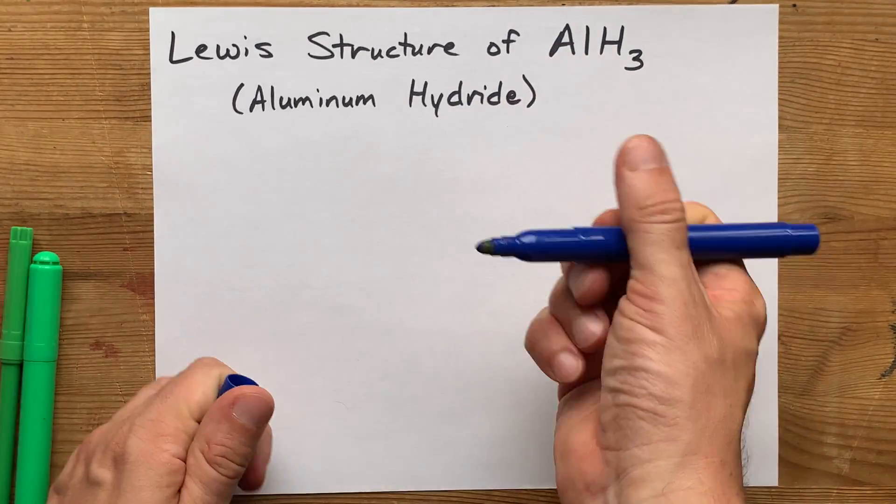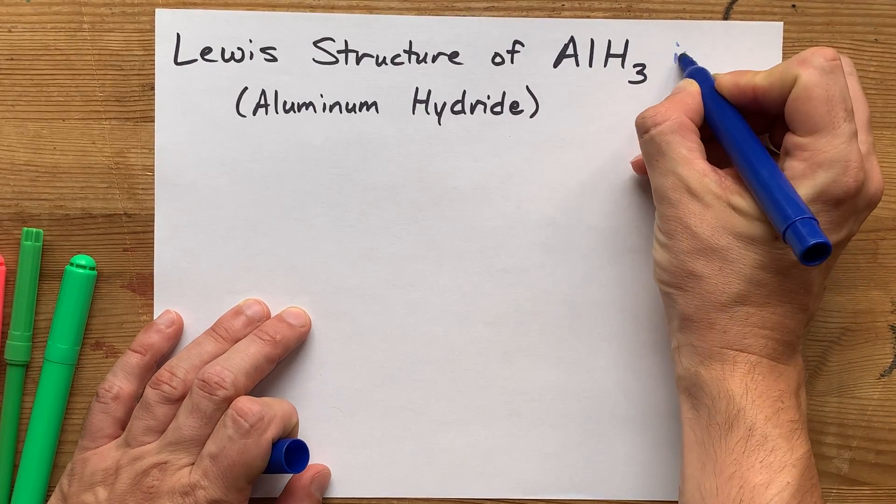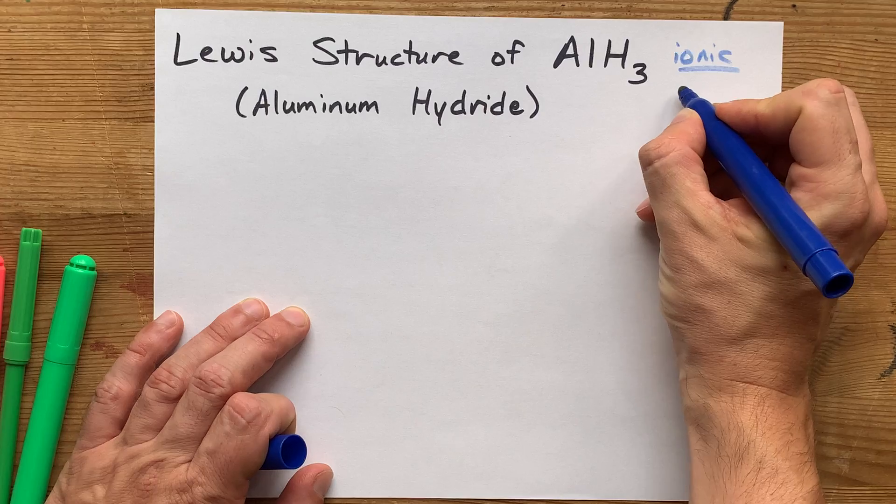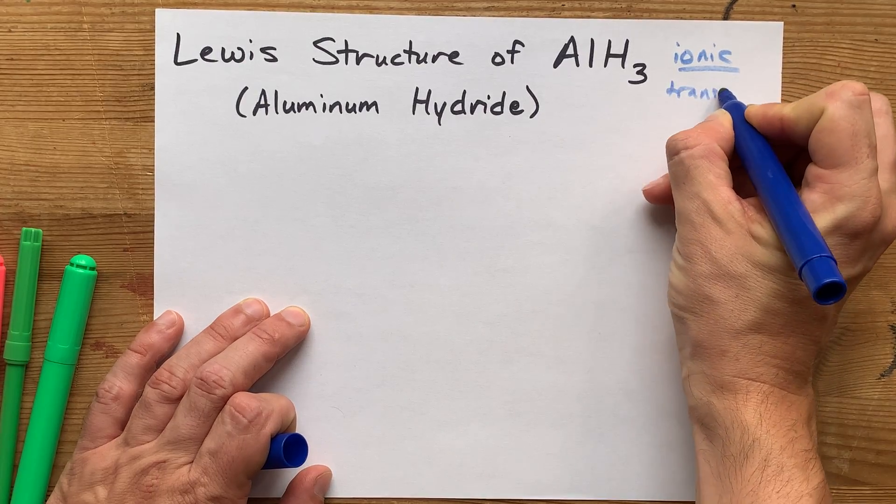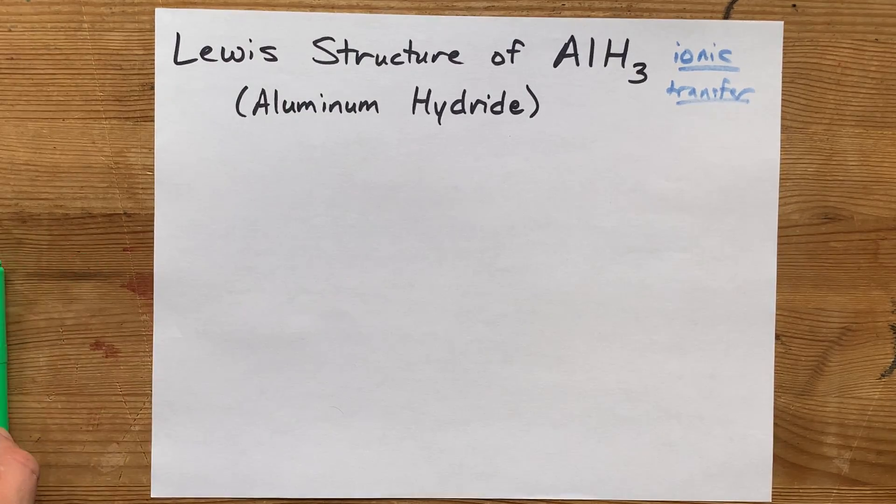Now this is a metal, aluminum, bonded with non-metal hydrogen, which means it is an ionic compound. There will be a transfer of electrons from the metal to the non-metals.